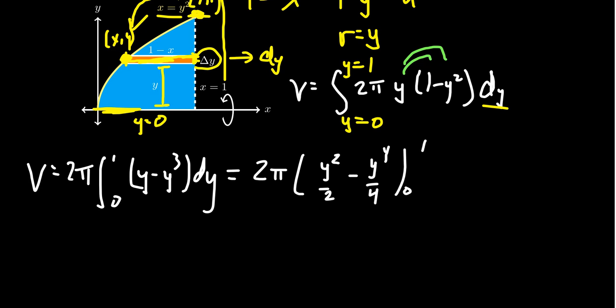When we plug in 0, everything will vanish. You plug in 1, we'll just get a bunch of fractions. So we end up with 2 pi times 1 half minus 1 fourth. Distributing the 2 through helps a little bit. That would give us 1 minus a half. And 1 take away a half is itself a half. We get the volume to be pi halves.